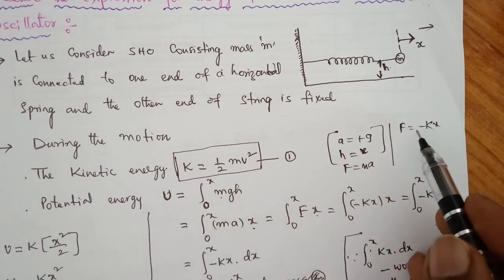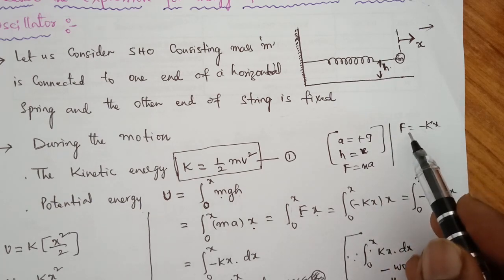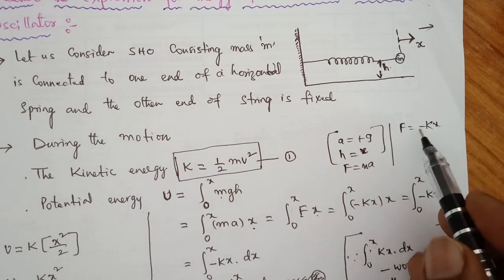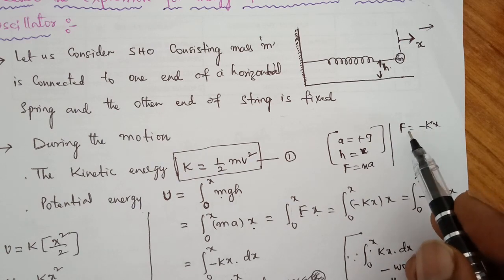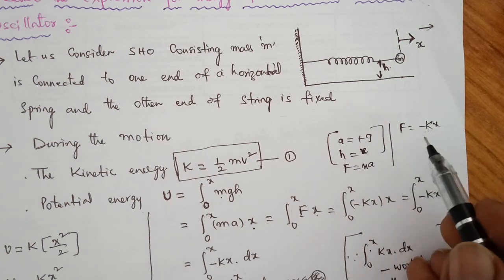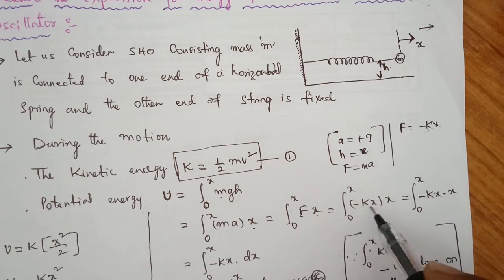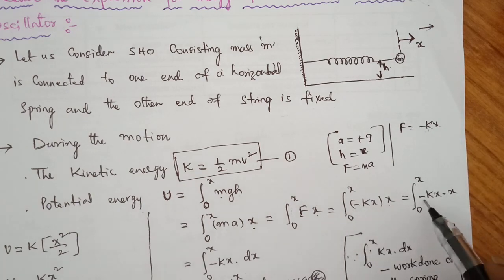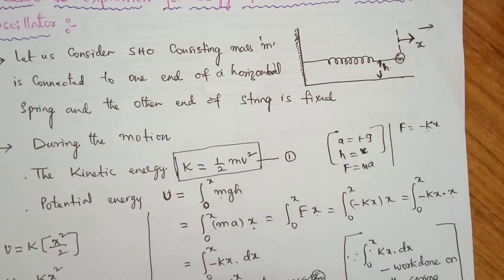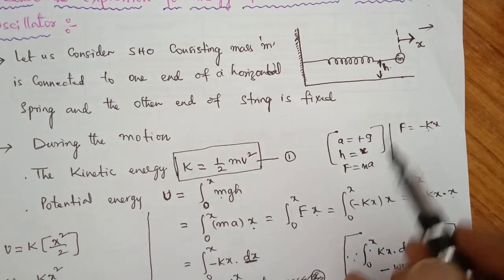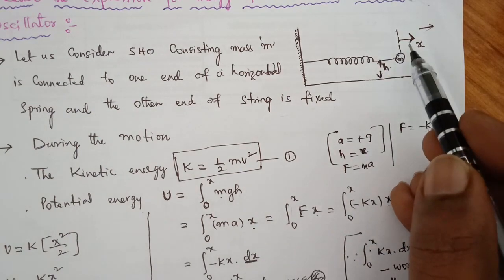F is equal to minus kx according to Hooke's Law — spring's force, spring's constant k. So the potential energy U is the integration from zero to x of minus kx dx, which is minus k times the integration from zero to x of x dx. Here dx is a small displacement by the moving spring when force is applied.